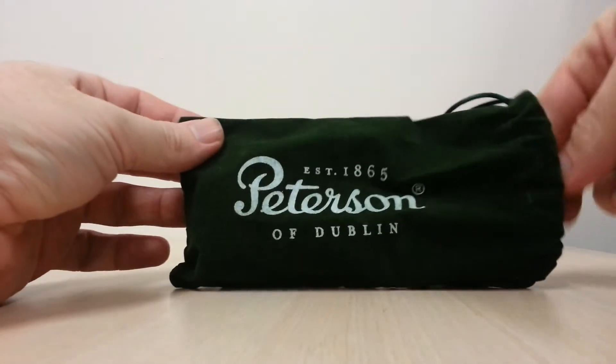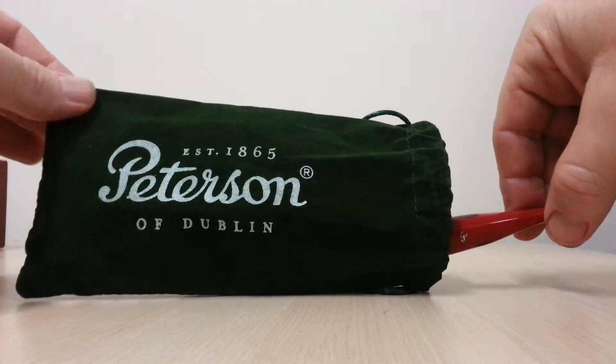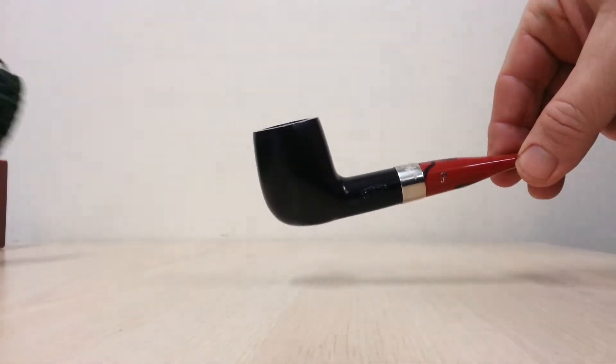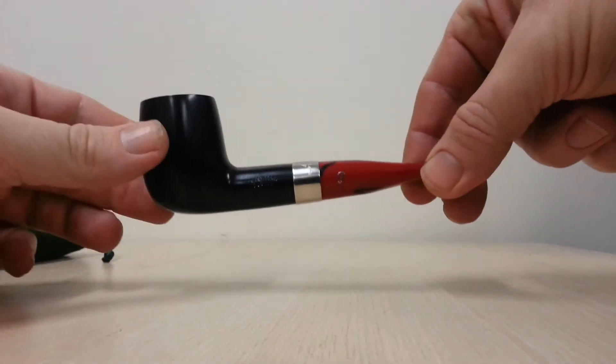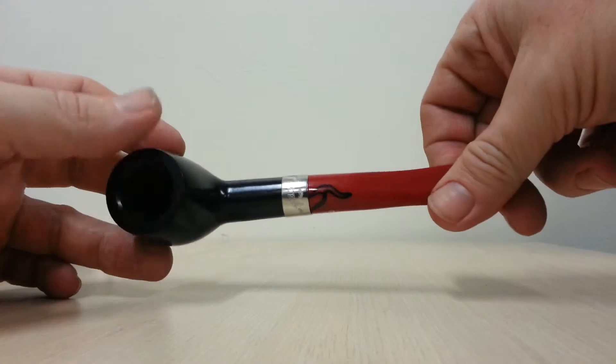This one is the X105, and it was the last one that Simon had in the shop. But you can see it's a lovely pipe, but you can see a big difference in the swirls.